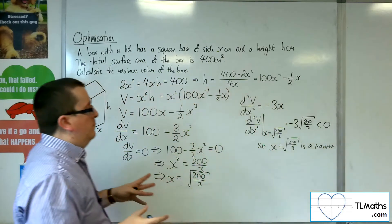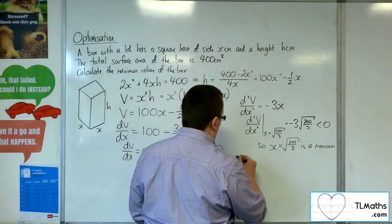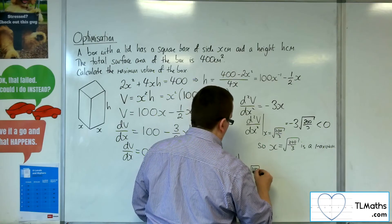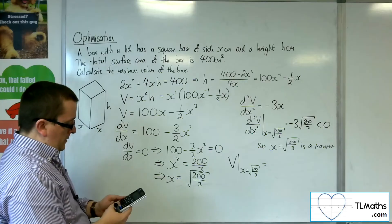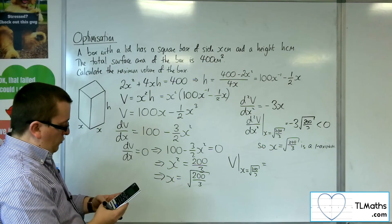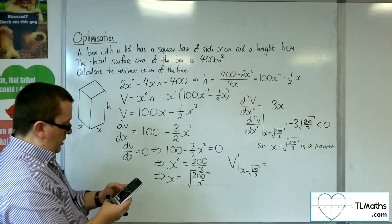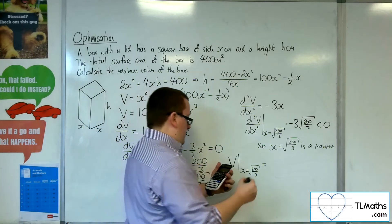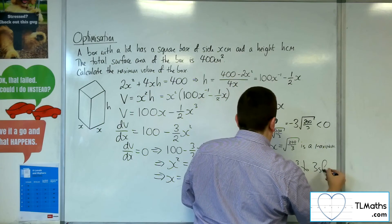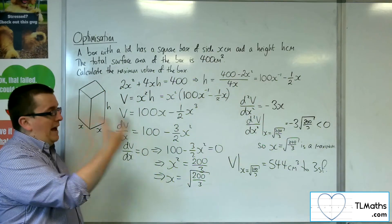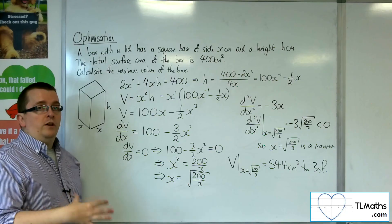That confirms that result. Now I know that's the maximum, so I can substitute it into the equation of the volume. Substituting the square root of 200 over 3 into the volume equation: 100 times that minus half times that cubed. And that gets me 544 cubic centimeters to 3 significant figures. And that is the maximum volume that can be reached with the surface area limited to 400 square centimeters.